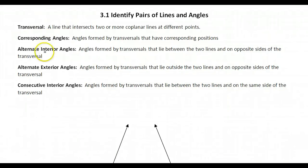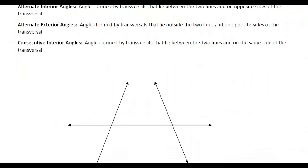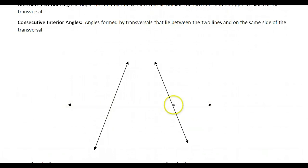There are five vocabulary words that you're going to need to know for this section. The first one is transversal. A transversal is a line that intersects two or more other lines. So in this diagram, we have three lines. One of those lines is a transversal — the one that intersects both of the other lines. So this horizontal line is our transversal.